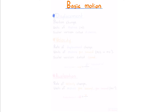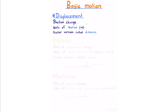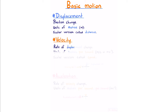Basic motion. Displacement is position change; we measure it in units of meters, and the scalar version without direction is called distance. So if I was going to go from A to B and then back, if the distance between them was 20 meters, the distance traveled would be 40 meters there and back.